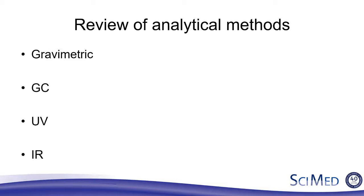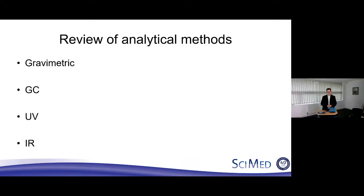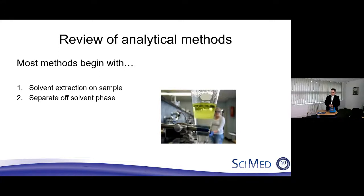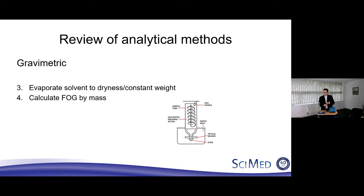Before we look at the InfraCal — which is what we're talking about this afternoon — let's review other analytical methods for determining fat, oil, and grease. Starting with gravimetric: most techniques begin with a solvent extraction phase where you have an aqueous sample, shake it up with organic solvent, it makes two phases, and all the fat is in the solvent phase. With gravimetric, we separate off that organic phase, evaporate it away, and what's left is fat, oil, and grease, calculated by mass.